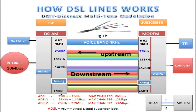ADSL has a maximum channel size of 256. So from 0 Hz to 1 MHz you have 256 four-kilohertz channels, and the maximum speed you can get is 8 megabits per second from those 256 channels at 4 kHz per channel. Each of these 4 kHz channels can hold up to a maximum of 56 kilobits of data — both upstream and downstream.